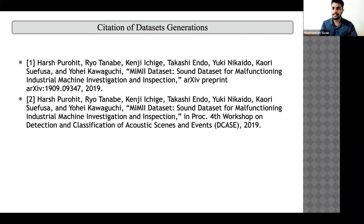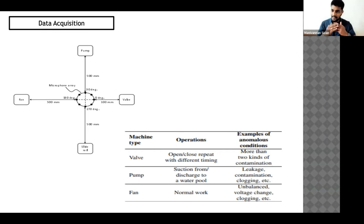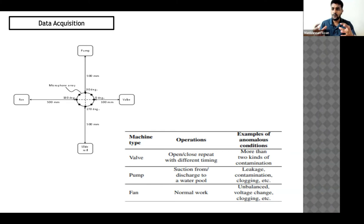In the paper, they describe an industrial setup with pumps, fans, valves, and slide rails. They used an eight-channel microphone array. The microphone placement distances are: 50 cm from the pump, 10 cm from the valve, 50 cm from the fan, and 50 cm from the slide rail.